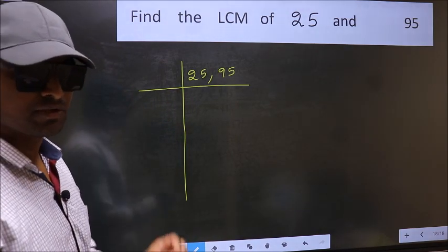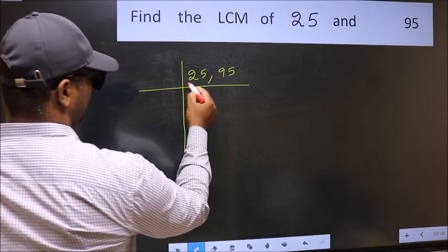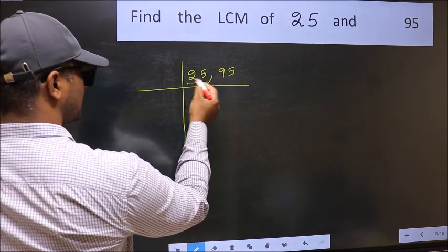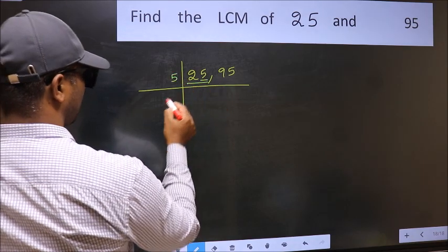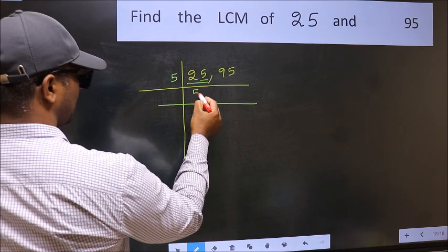Now you should focus on the first number which is 25 here. In this number, last digit 5, so take 5. When do we get 25 in 5 table? 5 times 5 is 25.